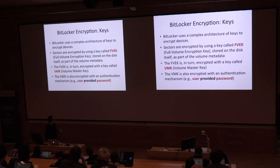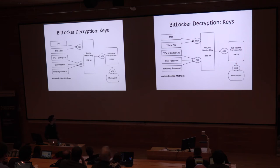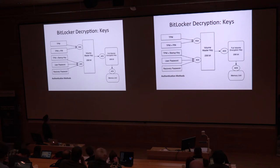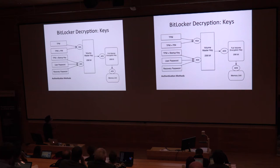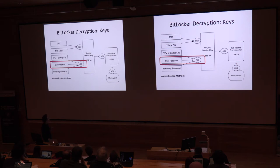The Volume Master Key is the main key used by BitLocker that encrypts the entire volume. Finally, the Volume Master Key is encrypted in turn with the authentication method chosen by the user — in my example, that method was the password. So when a user wants to read the content of their encrypted pen drive or memory unit, the user must choose one of the authentication methods. Depending on this choice, BitLocker uses a different decryption algorithm to decrypt the Volume Master Key, then decrypts the Full Volume Encryption Key, and finally decrypts the entire memory unit.